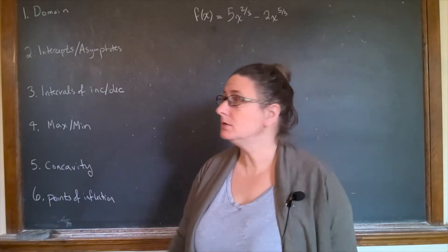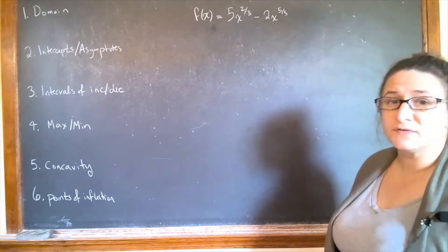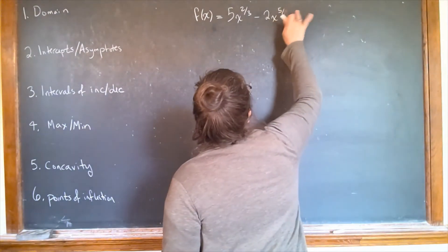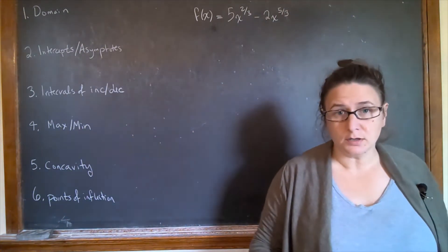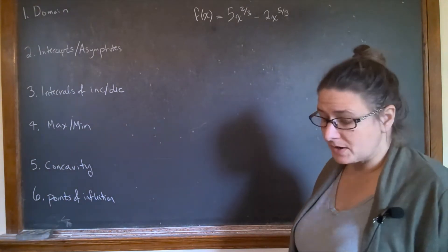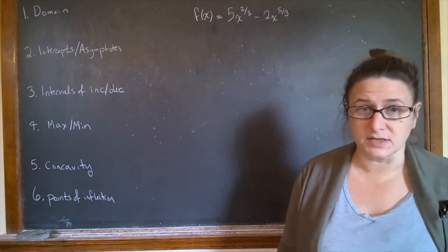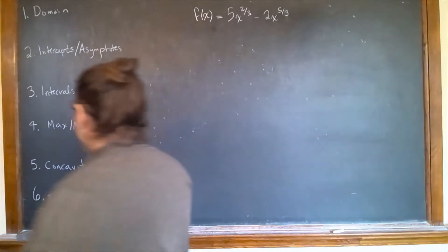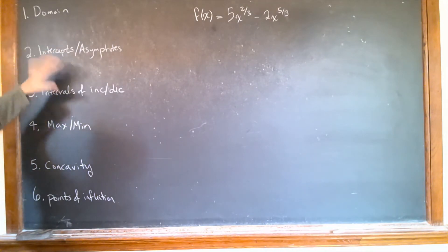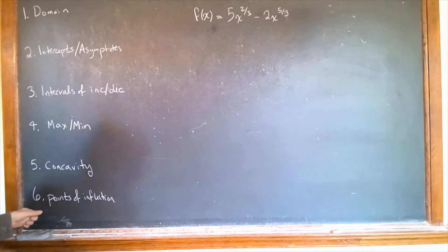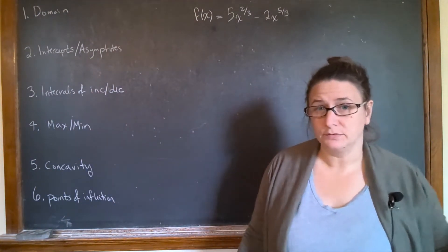We're going to graph this function f(x) = 5x^(2/3) minus 2x^(5/3). We want to graph the function like on the worksheet — there were a whole bunch of things to check. I've listed them all here, and once you've figured out all this information, you're going to draw the graph.